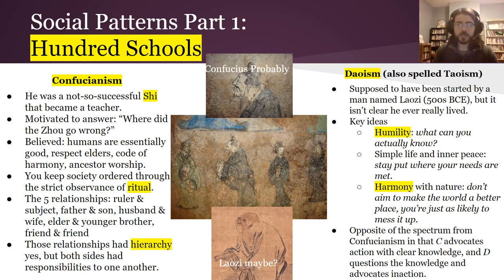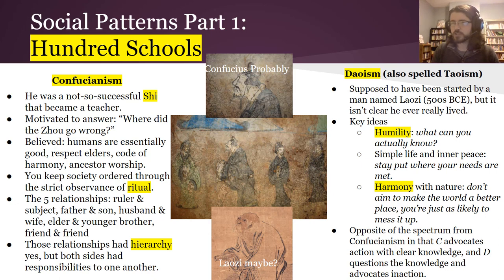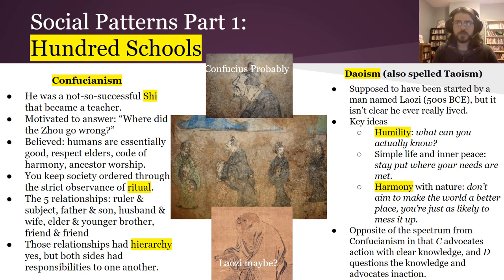Daoism is totally different — a very different reaction to the same set of problems. It's supposedly started by a man named Lao Tzu, but it's not really clear this person ever actually existed. The key ideas were humility — rather than knowing exactly what you're supposed to do, Daoism asks: how can you actually know that? Why should tradition be followed? They also wanted you to follow the simple life, have inner peace, and harmony with nature — which really meant don't try to solve problems because you'll likely make them worse. You can see how these are not exactly opposites but are opposed on a spectrum: Confucianism says we know what to do, just do it. Daoism says we don't know what to do, so don't mess it up.